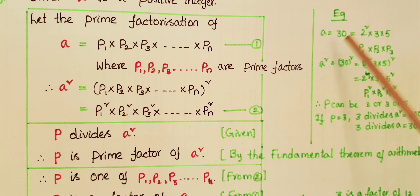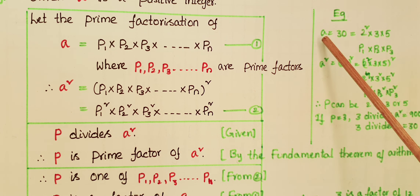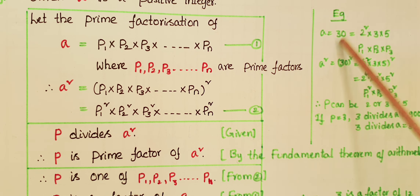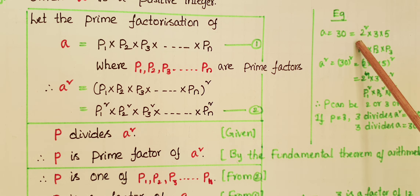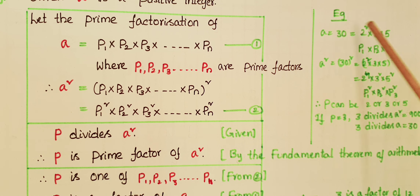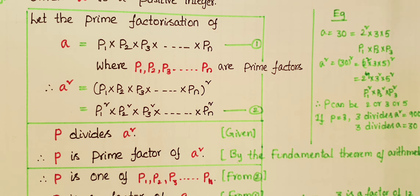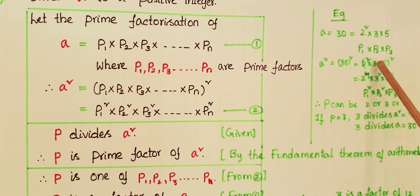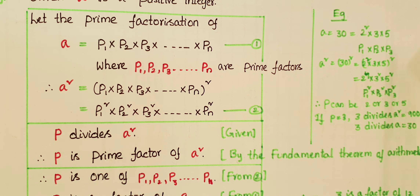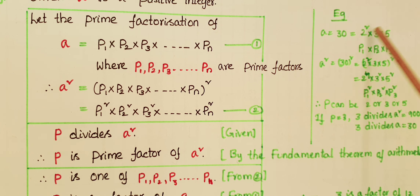We can verify this with an example. Let the positive integer a equal 30. We express 30 as a product of its prime factors: 30 = 2 × 3 × 5, so p1, p2, p3 are 2, 3, and 5. Then a squared equals 30 squared, which equals (2 × 3 × 5) squared = 2 to the power of 4 × 3 squared × 5 squared.